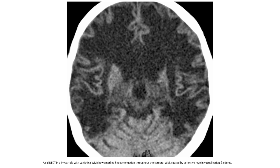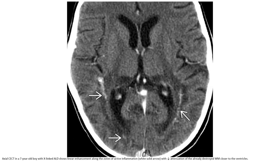Non-contrast enhanced CT in a 9-year-old with Canavan disease shows marked hypoattenuation throughout the cerebral white matter caused by extensive myelin vacuolysis and edema. Enhanced CT in a 7-year-old boy with X-linked ALD shows linear enhancement along the zone of active inflammation, with decreased attenuation of the already-destroyed white matter closer to the ventricle.